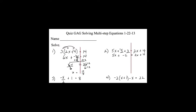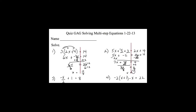Next I check for variables on both sides. I have 5x on the left and 2x on the right, so I need to move one. Our pattern is to move variables to the left, so opposite of 2x is negative 2x. Those cancel, leaving 3x plus negative 2 equals 4. Opposite of negative 2 is positive 2 on both sides, giving 3x equals 6. Divide by 3, and x equals 2.